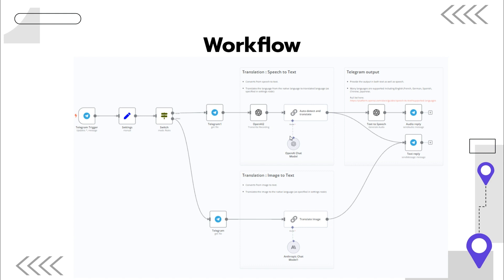Now let's take an overview of the workflow and how this app is implemented. The leftmost node is a Telegram trigger that monitors for incoming messages to your Telegram bot. The next node is a settings node where we specify which languages we're translating to and from. A switch node then determines if it's audio or an image and routes it to the respective path. The top path handles speech-to-text with an OpenAI model and then text-to-speech after translation. The bottom path uses Anthropic Claude 3 models to go from image to text and translation. On the right are both the audio response and the text response.